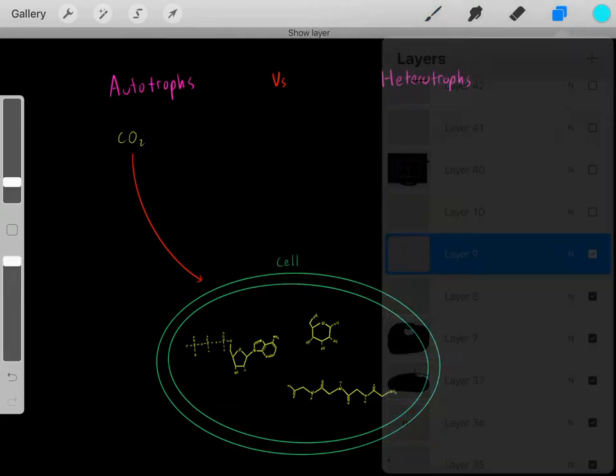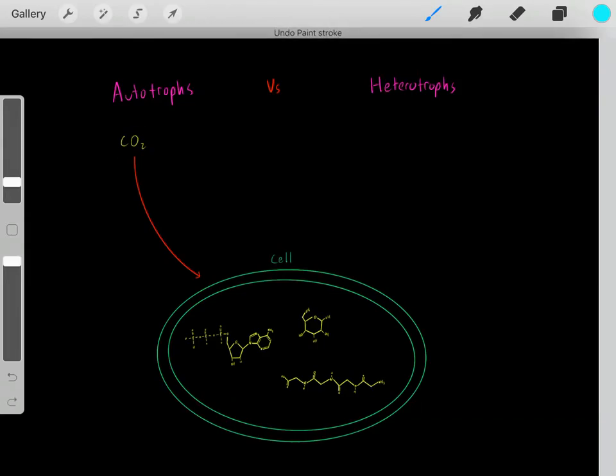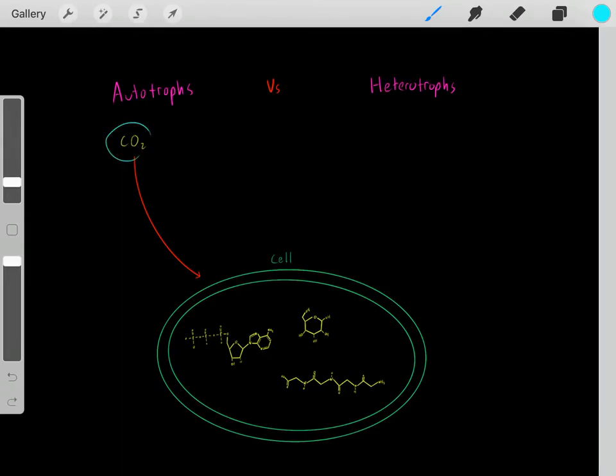Well, if you're an autotroph, you can simply take the carbon from carbon dioxide. We know in our atmosphere we have carbon dioxide, so if you're an autotroph, you can take that carbon dioxide from the atmosphere as a source of carbons to create all your own organic molecules you need for life. So that's very convenient.